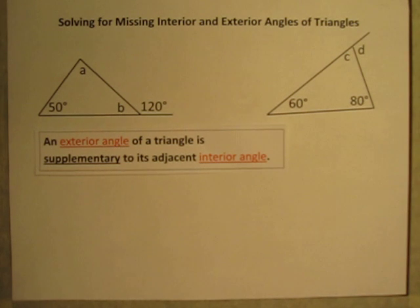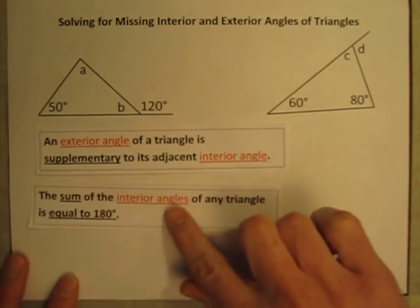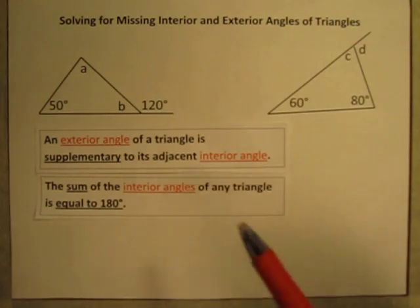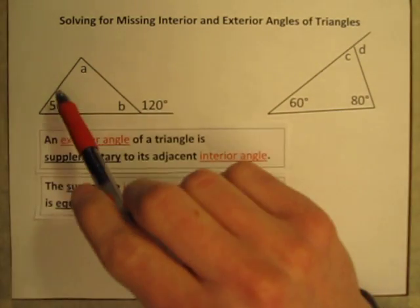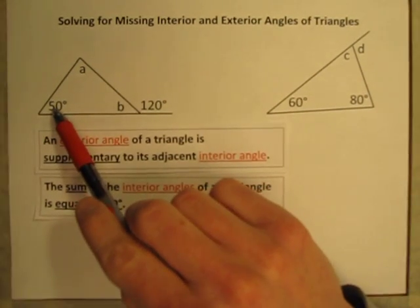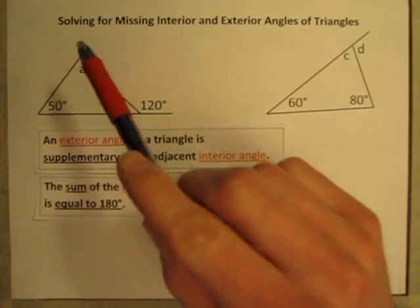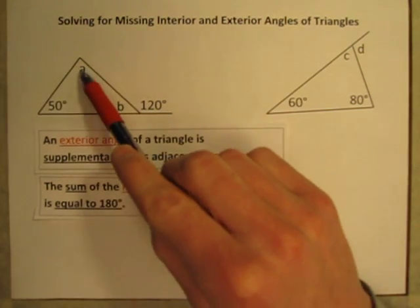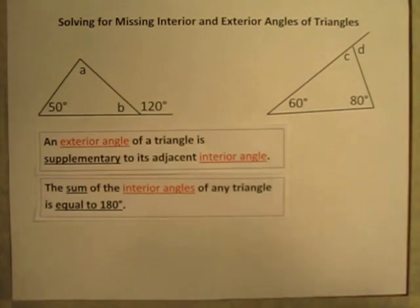So that's the first thing we need to know. The second one is here that the sum of the interior angles of a triangle is equal to 180 degrees. So that's pretty self-explanatory. The triangle has three angles inside it, this 50 degree angle, angle A, and angle B.